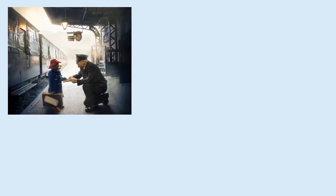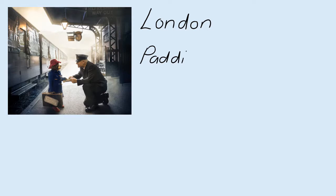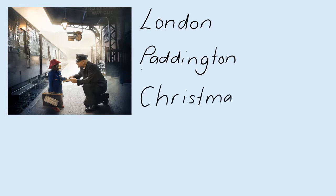Now, I'm going to say that Paddington is catching the train in London. London is a location, so when I write London in my sentence it definitely needs a capital. I'm going to use the character's name Paddington — because that's a name, it's a proper noun and it needs a capital. I'm also going to choose an event: I'm going to say that Paddington is catching the train at Christmas — Christmas Day. That's an important event and it needs capital letters.